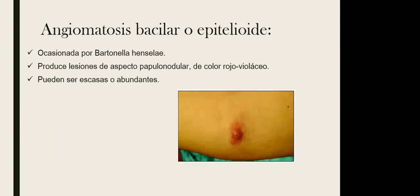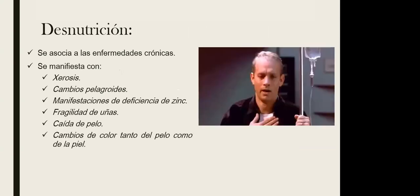La angiomatosis bacilar o epitelioide está ocasionada por Bartonella henselae, un bacilo. Una de las características más importantes a nivel cutáneo es que las lesiones van a ser escasas, incluso puede presentarse como lesión única. Tiene aspecto papulonodular y el color característico es rojo o incluso violáceo, con tonos al violeta o púrpura. Cuando se presentan en cantidades abundantes, ya quiere decir que la infección es más grave. Las lesiones cutáneas en general nos pueden indicar la gravedad de la enfermedad.